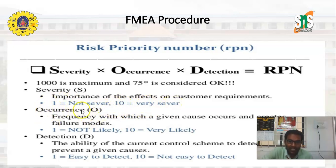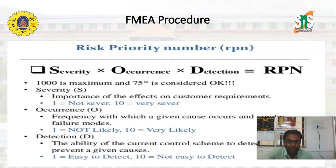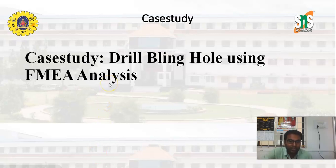Next is the occurrence level (O) — the frequency with which a given cause occurs and creates failure modes. For example, if a product fails repeatedly within one week, the occurrence rating is high. A rating of 1 means failure is not likely to happen within a month; a rating of 10 means the failure rate is very high. The detection level (D) represents the ability of the current control scheme to detect or prevent a given cause. A rating of 1 means it is easy to detect; a rating of 10 means it is very difficult to detect.